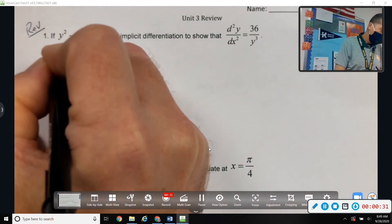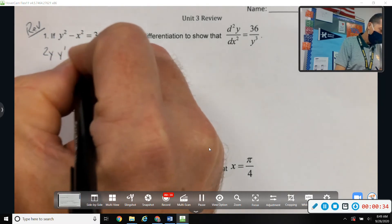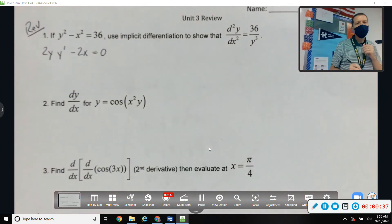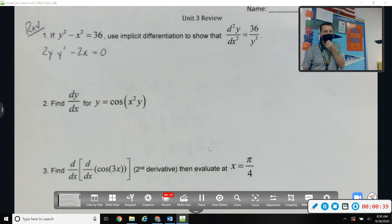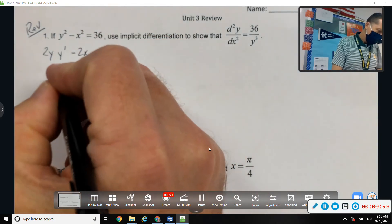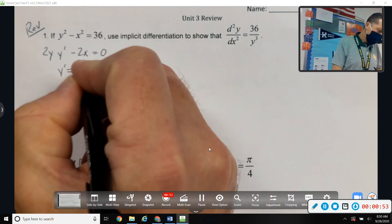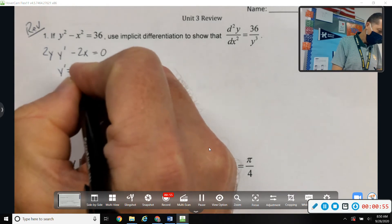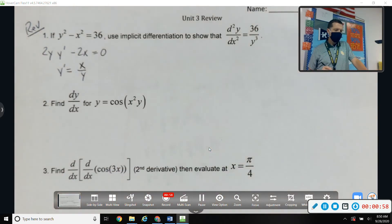So, 2y*y' - 2x = 0. So there's my first derivative. I used y prime. If you prefer dy/dx, you can do that. Either one is okay. So y' = x/y. Okay, that's not too bad. Right? Move the 2x over, divide by 2y, the twos go away. So there's first derivative. That was nice.